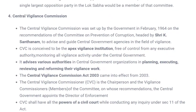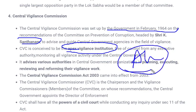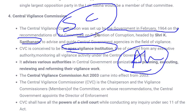The last non-constitutional body is the Central Vigilance Commission, set up by the government in February 1964. An important point: it is the apex vigilance institution of our country. Do not get confused — just as the Supreme Court is our apex judiciary body, the apex vigilance institution is the Central Vigilance Commission, not the CBI.